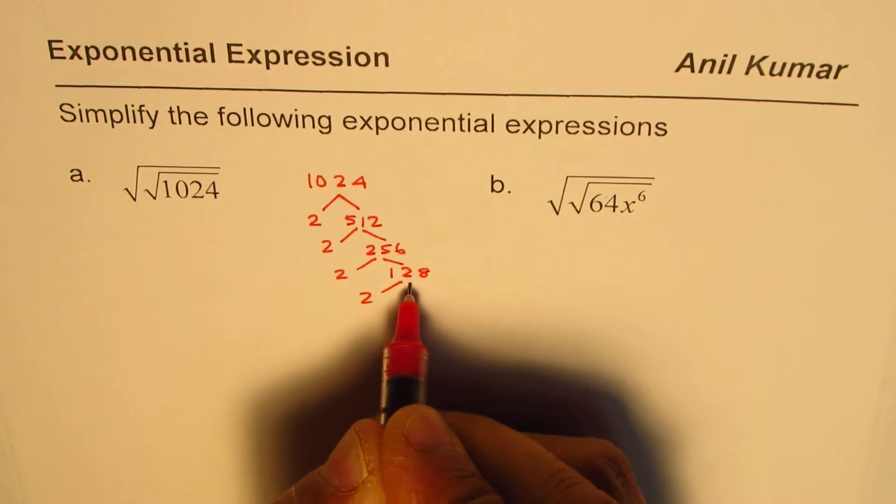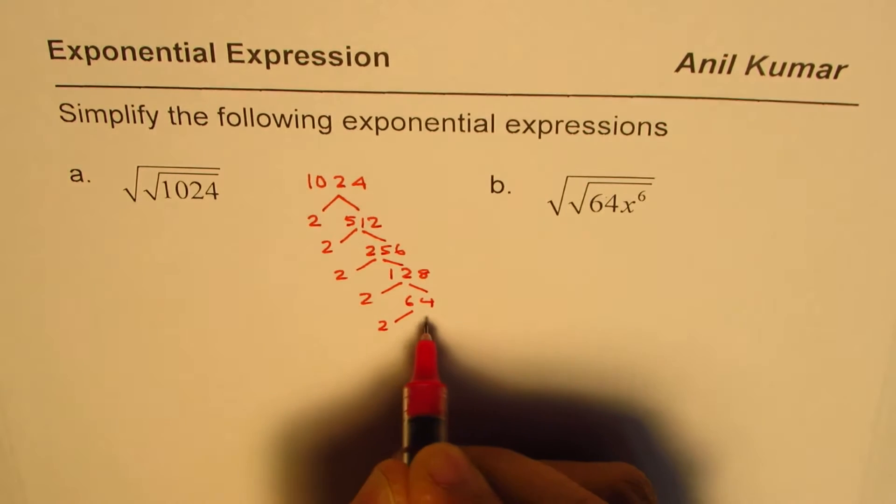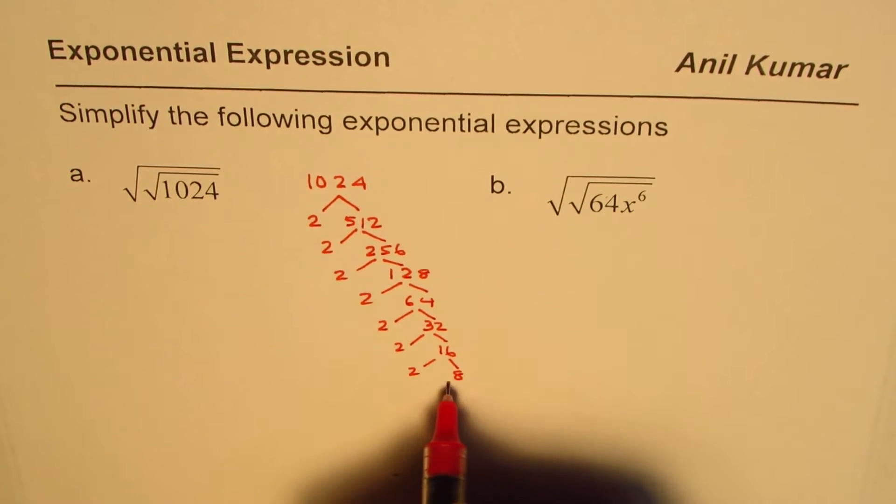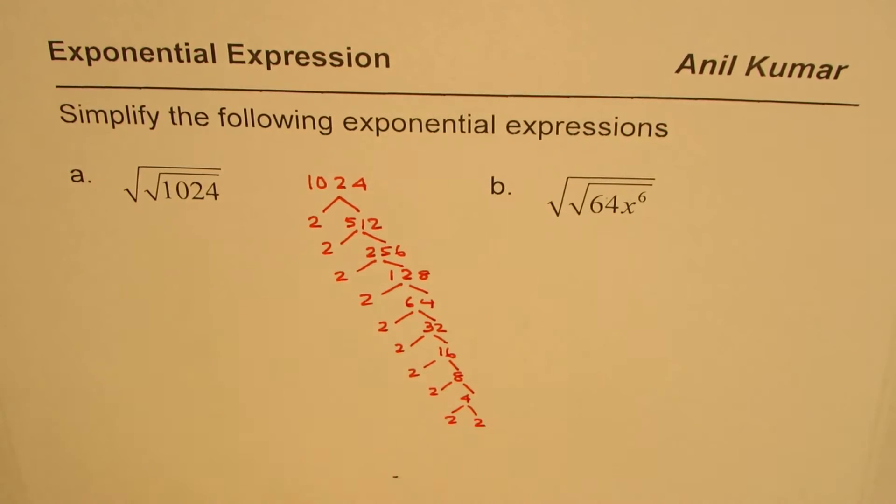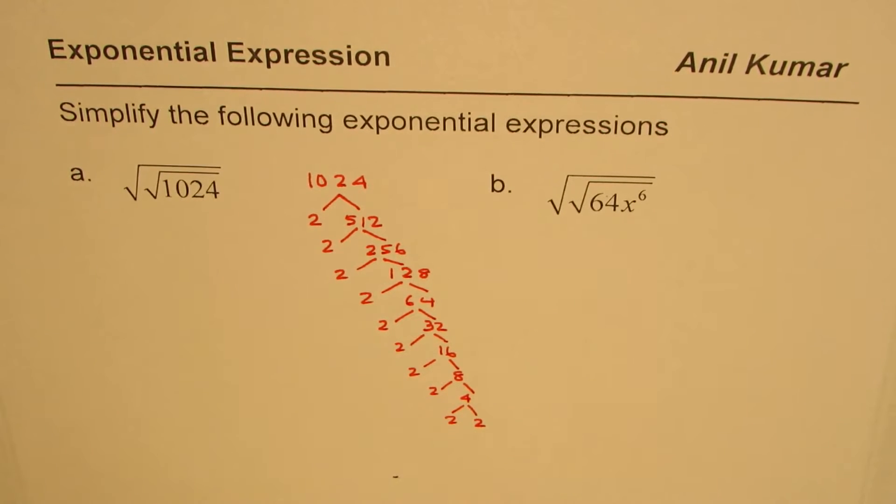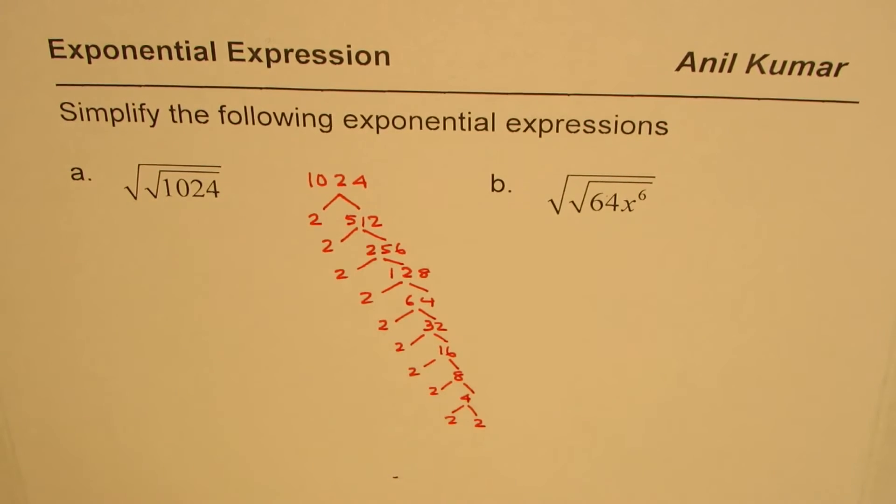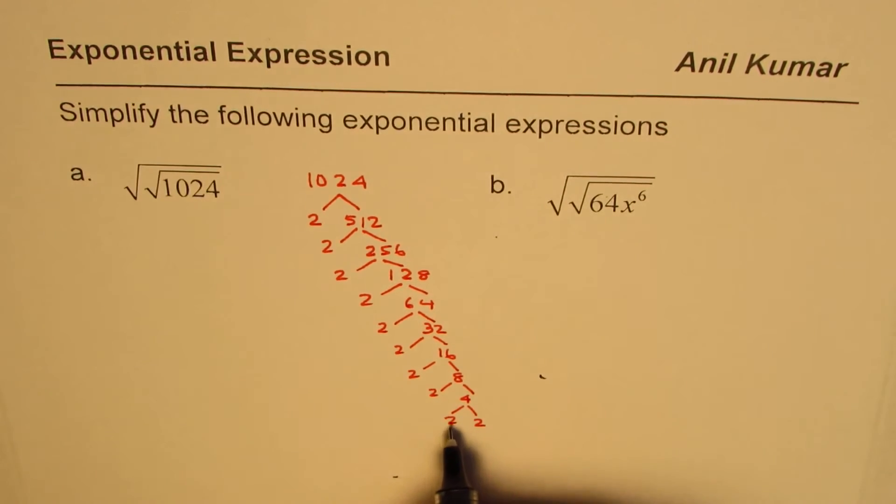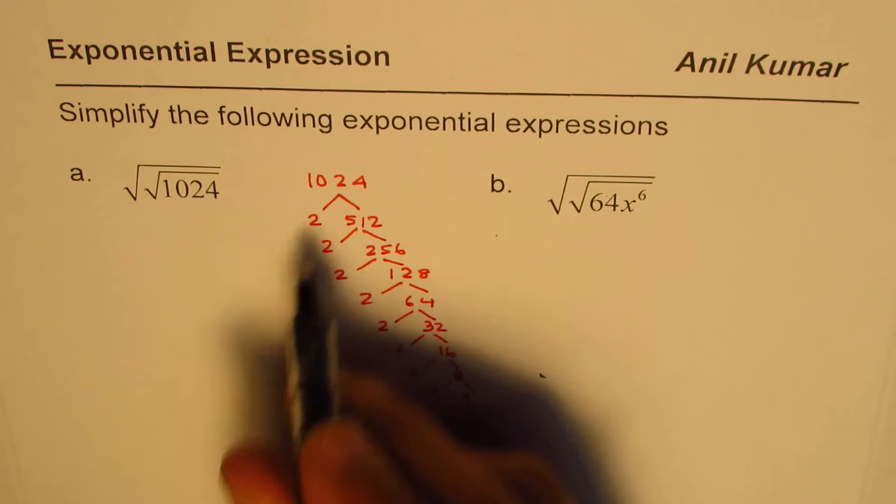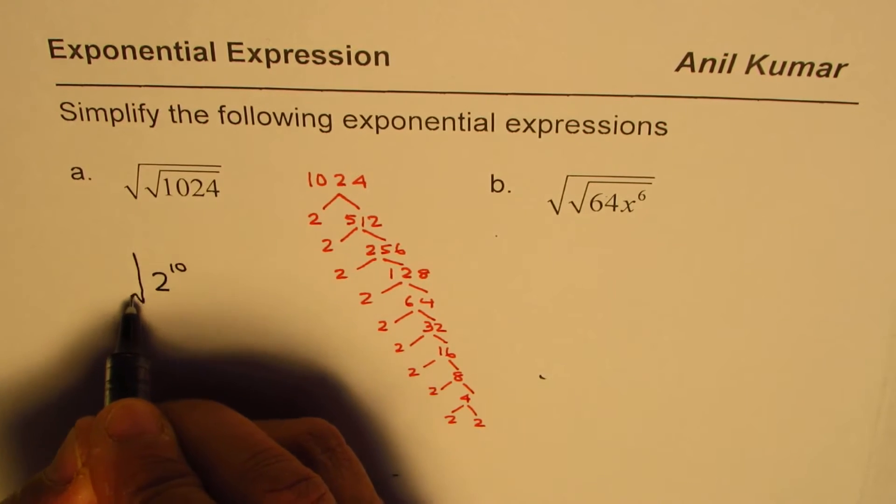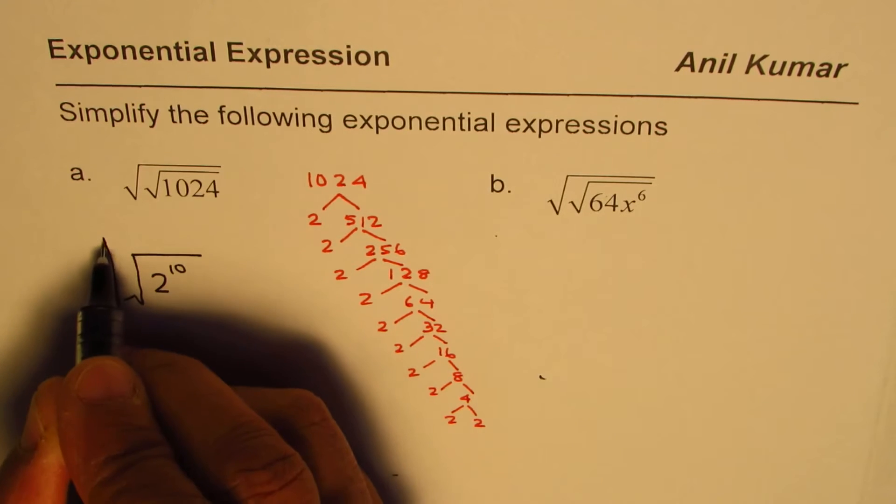Continue dividing by 2: half of 64 is 32, 16, 8, 4, and that is 2 times 2 is 4. So that gives us powers of 2 in a series. So 1024 can be written as 2 to the power of what? Let's count them: 1, 2, 3, 4, 5, 6, 7, 8, 9, 10. So I could write this as 2 to the power of 10.